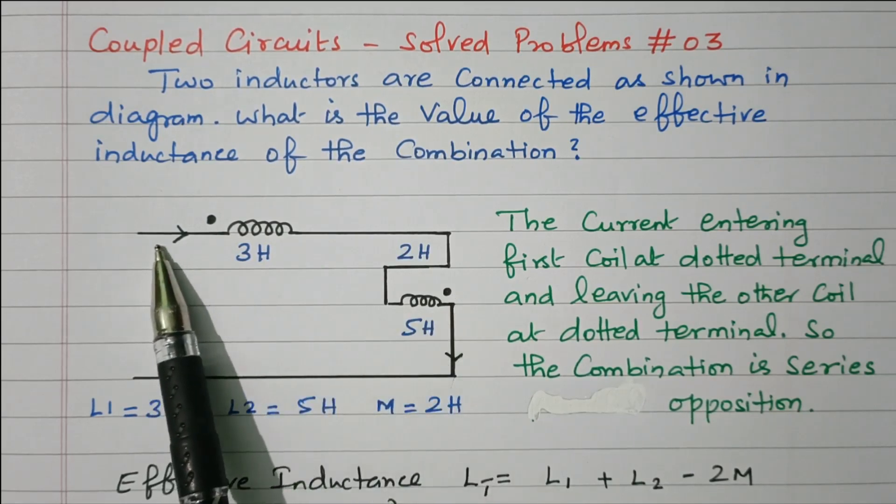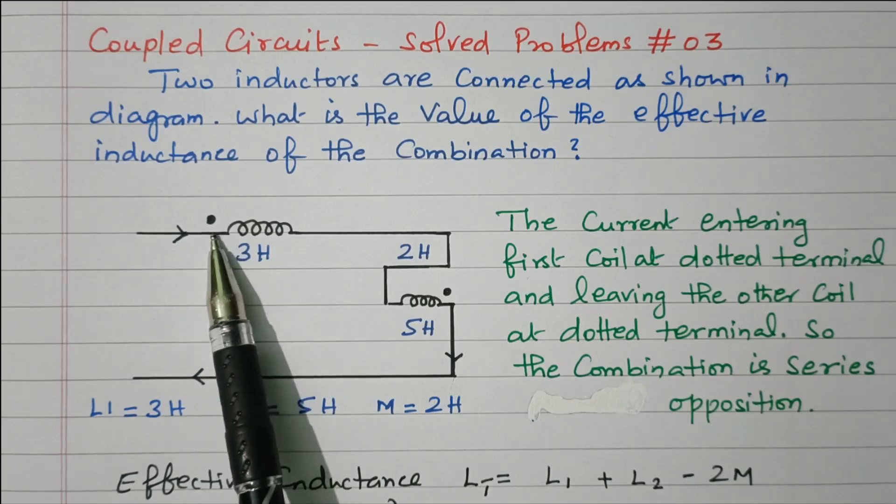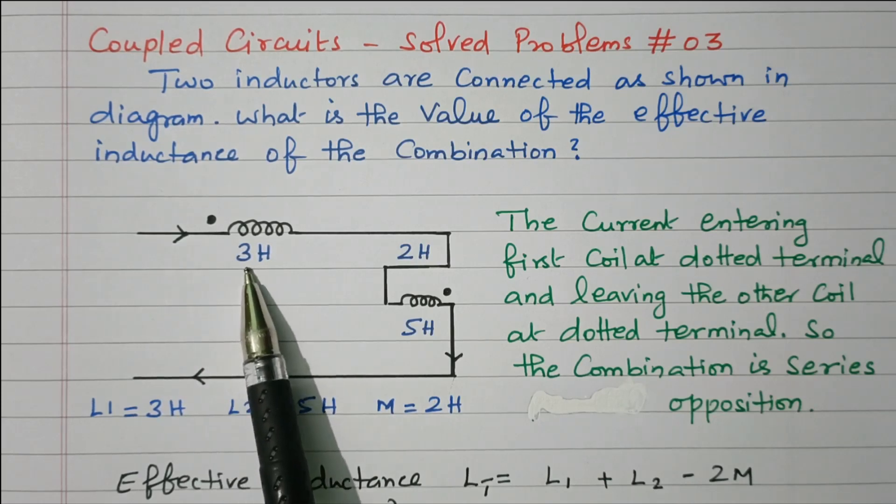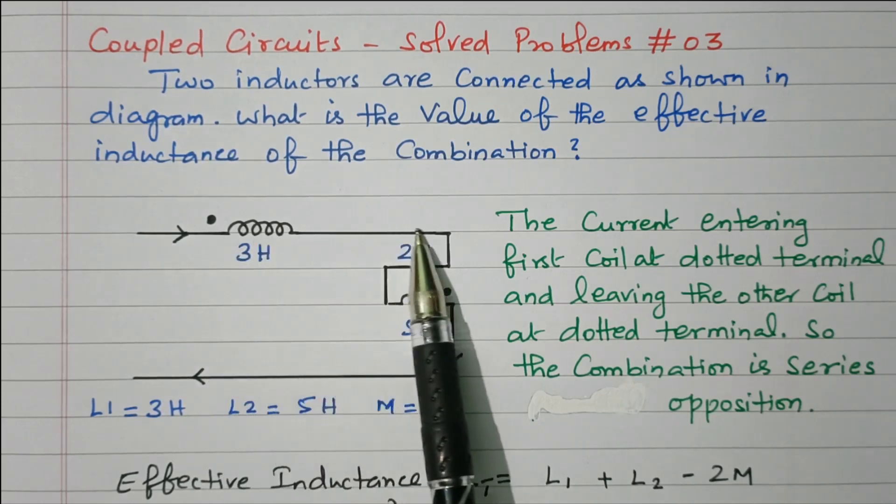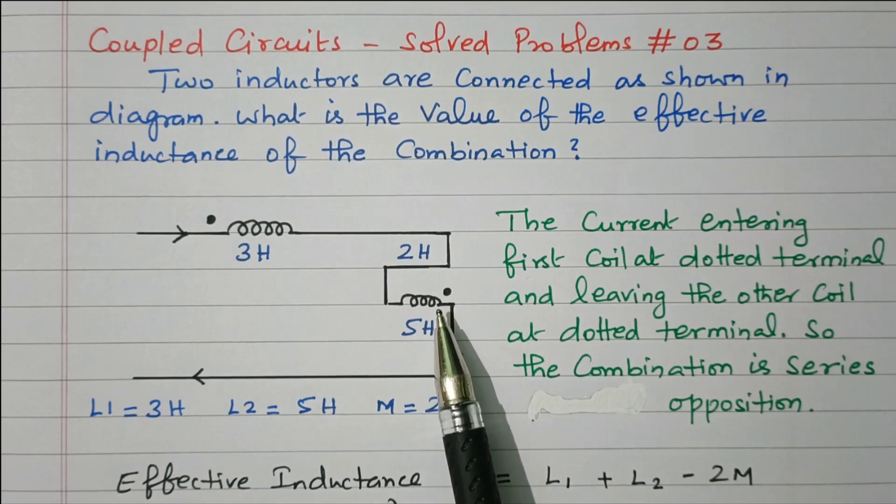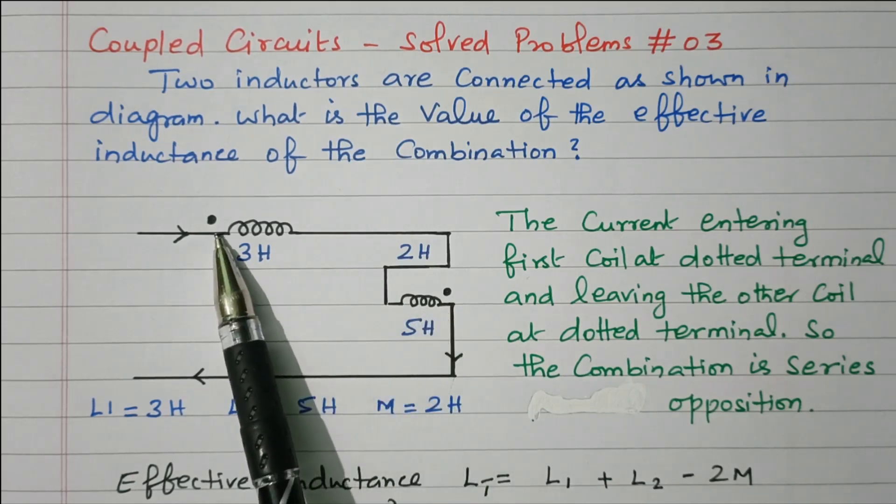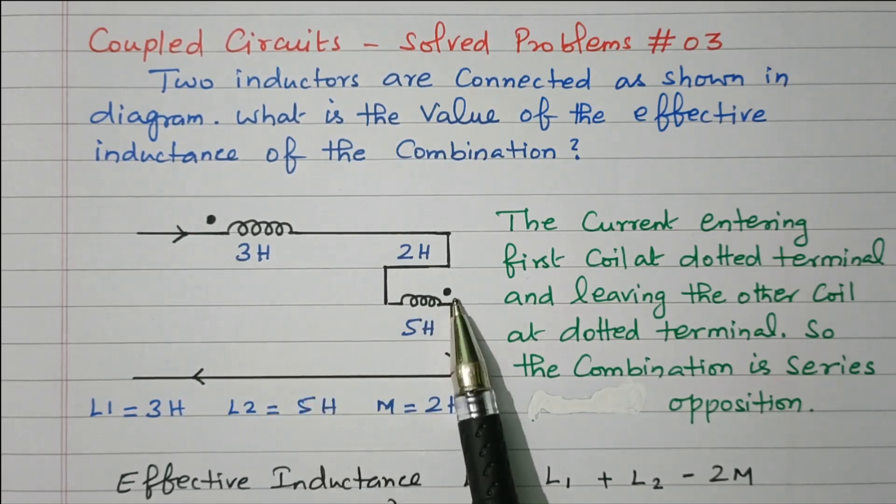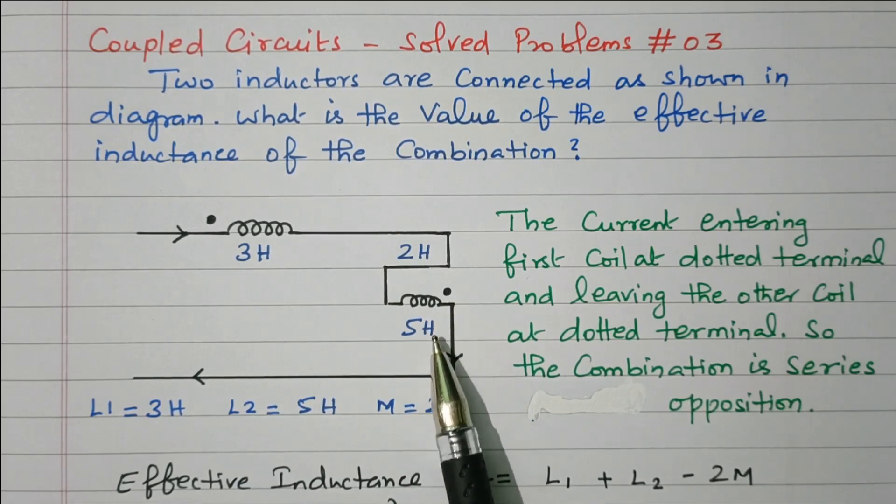See the current direction. The current enters at the dotted end of the first coil. The same current is flowing through coil 2 but leaves at the dotted end. The current enters at the dotted end in coil 1 and leaves at the dotted end in coil 2.